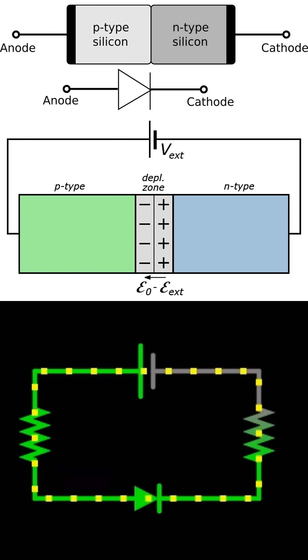In forward bias, the positive terminal of a power source is connected to the p-side and the negative terminal to the n-side. The depletion region shrinks. This reduction allows electrons to flow freely across the junction, enabling current to pass through the diode.